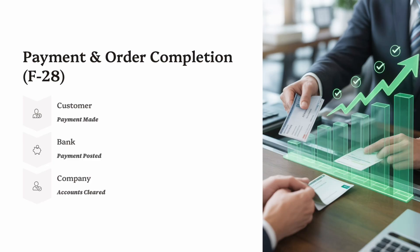Step 5: Payment and Order Completion (F-28). The final step of the order-to-cash process is payment processing, where the company receives money from the customer. This step is managed in Financial Accounting (FI) using transaction F-28. The customer transfers the invoice amount through bank, check, or another method, and the payment reference — like an invoice number — is used to match the open item in SAP. In SAP, open receivables from billing (VF01) are cleared when the payment is posted using F-28. Accounting entries are automatically created: Debit bank account, Credit customer account, clearing the receivable.